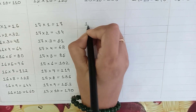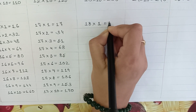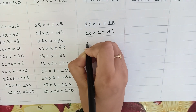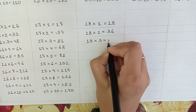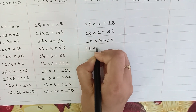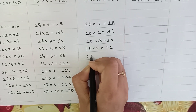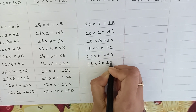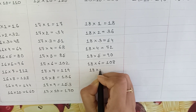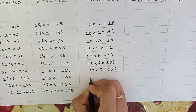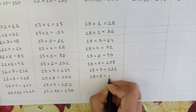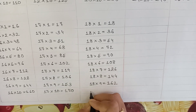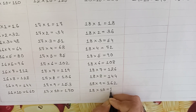Next: 18 x 1 is equal to 18. 18 x 2 is equal to 36. 18 x 3 is equal to 54. 18 x 4 is equal to 72. 18 x 5 is equal to 90. 18 x 6 is equal to 108. 18 x 7 is equal to 126. 18 x 8 is equal to 144. 18 x 9 is equal to 162. 18 x 10 is equal to 180.